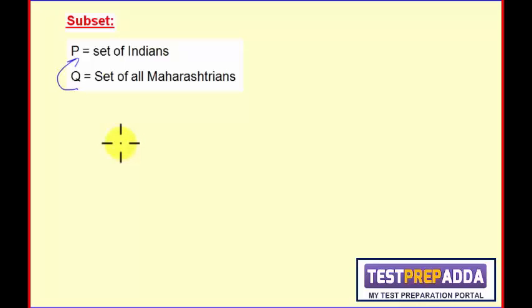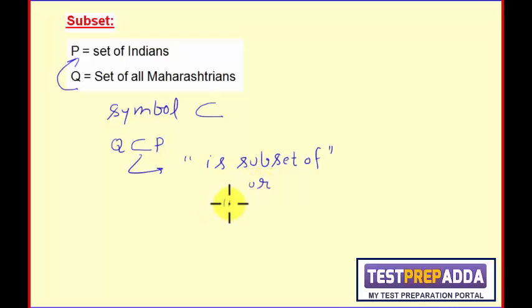A set Q is called as subset of P, and it is represented with this symbol. So here I can write Q is the subset of P. This symbol stands for is subset of. So we read this as Q is subset of P, or you can also say Q is contained in P.